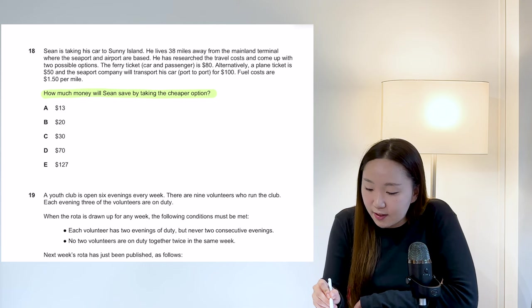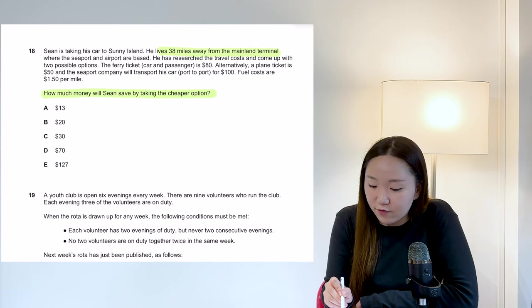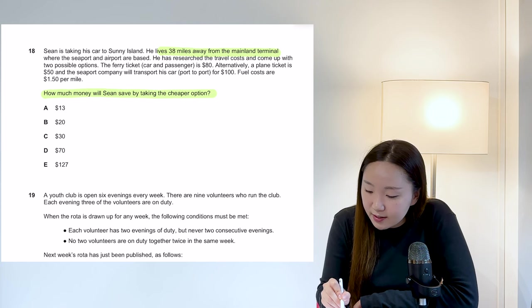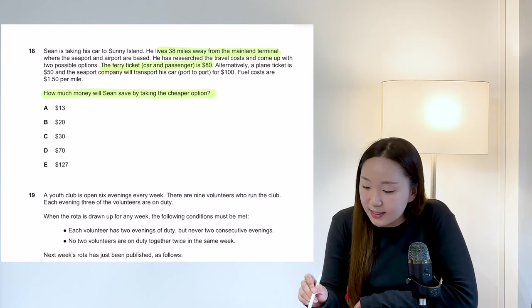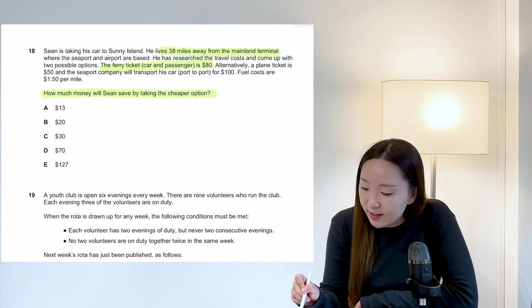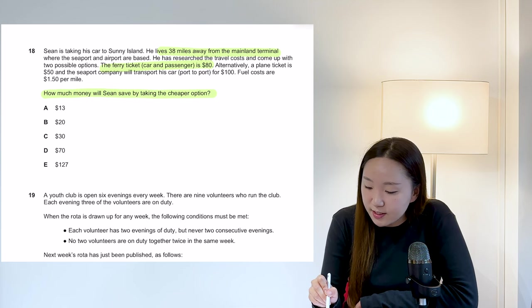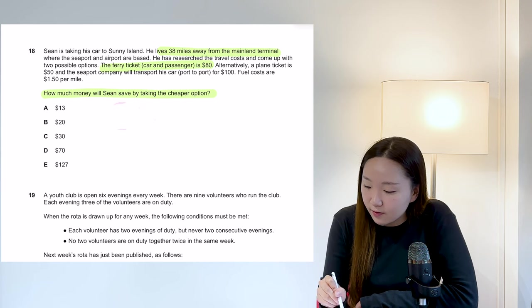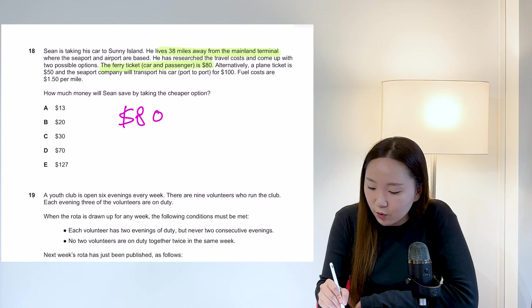So he's taking his car to Sunny Island, lives 38 miles away from the main terminal. He has researched travel, whatever. Ferry ticket is car and passenger, it's $80. And then alternatively, so we know this is the other option now. So it's either $80. Oops. It's either $80 for option one.